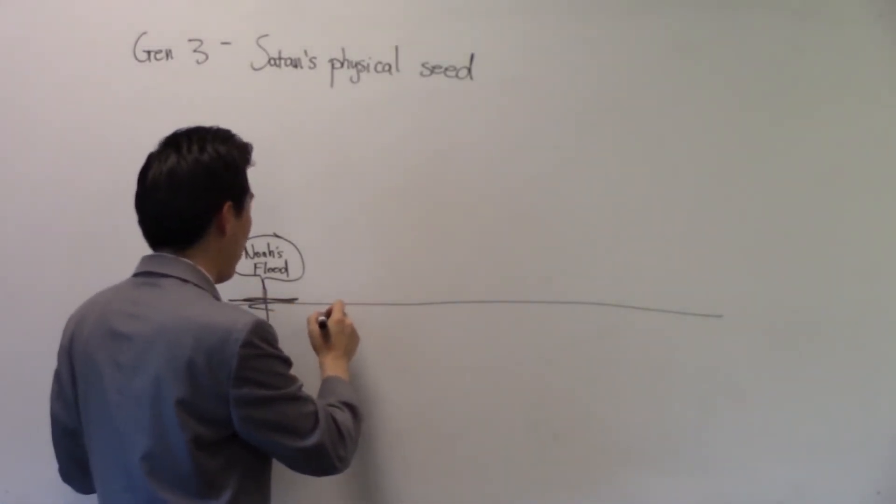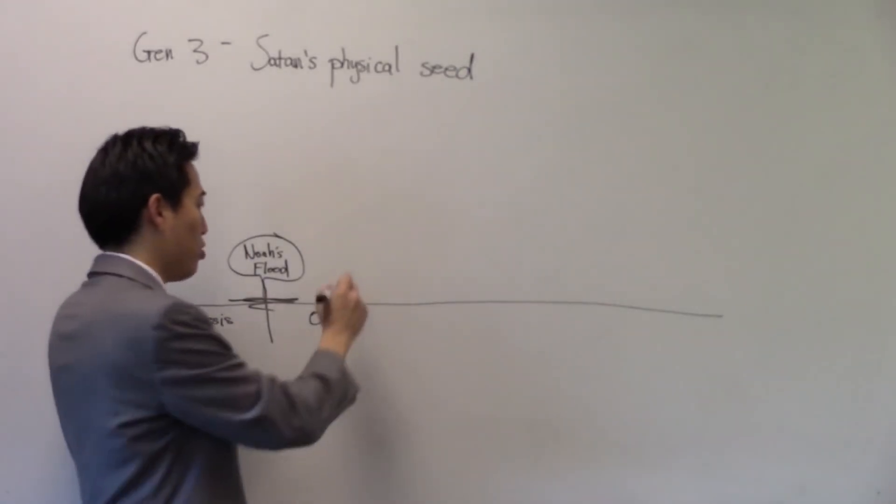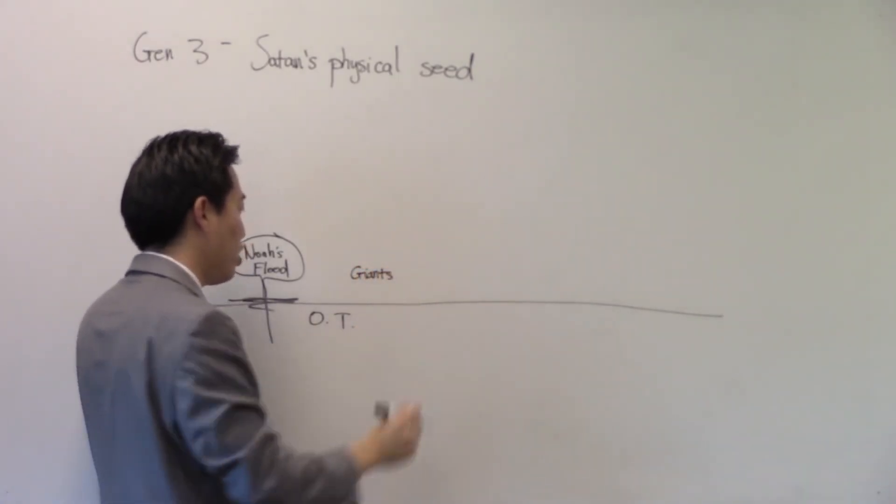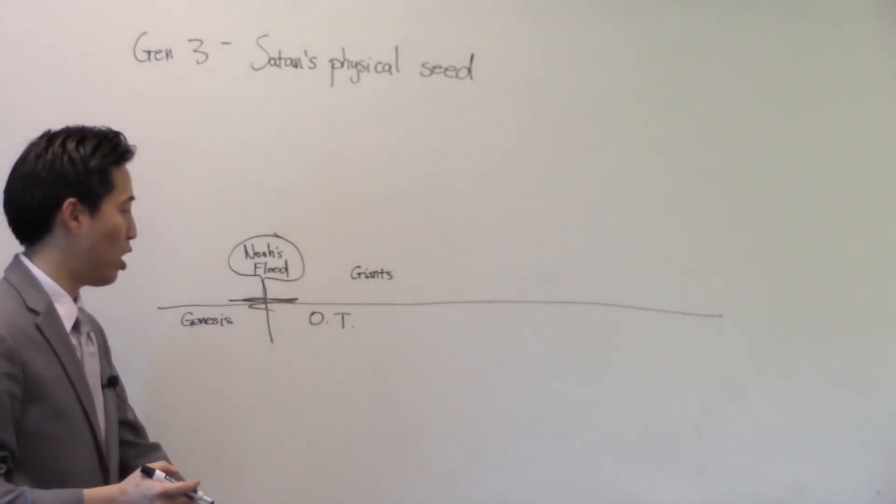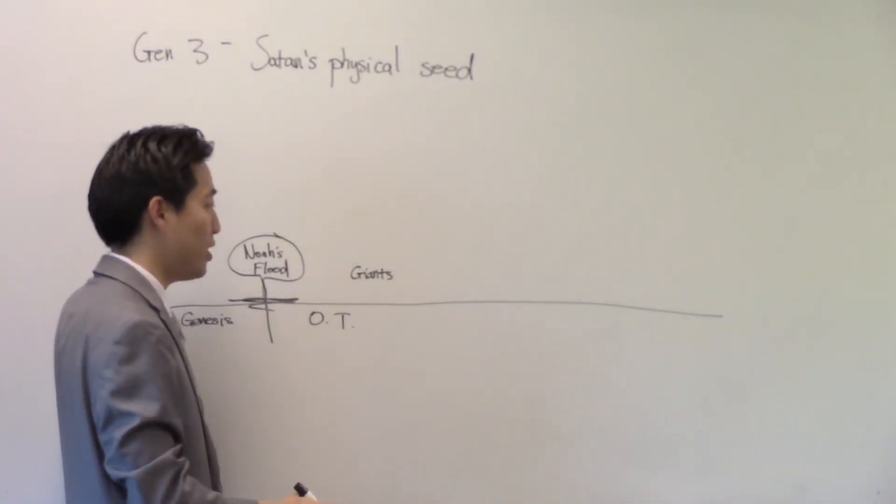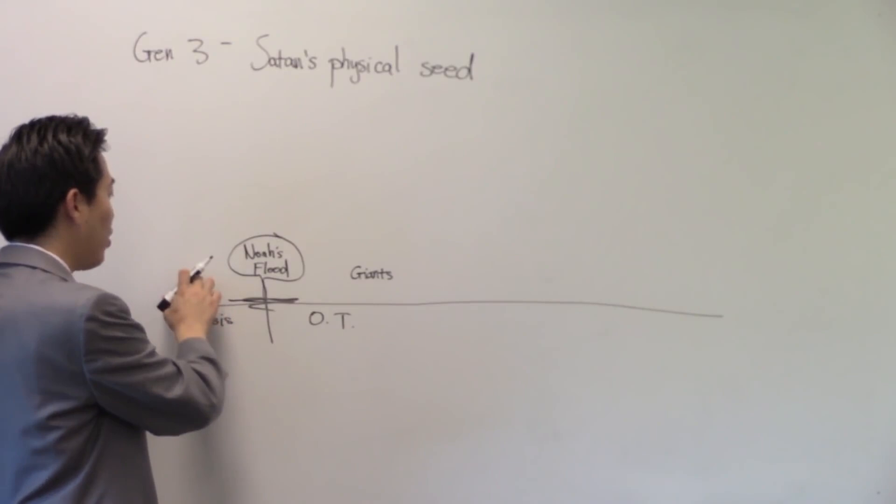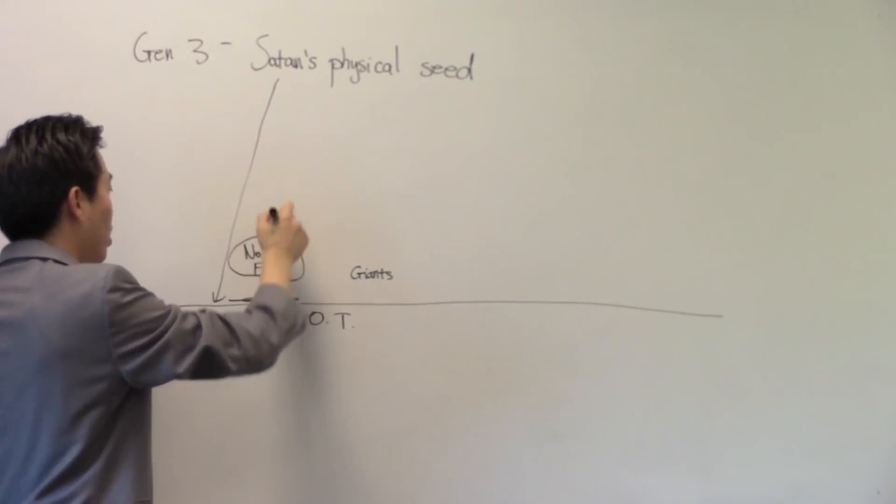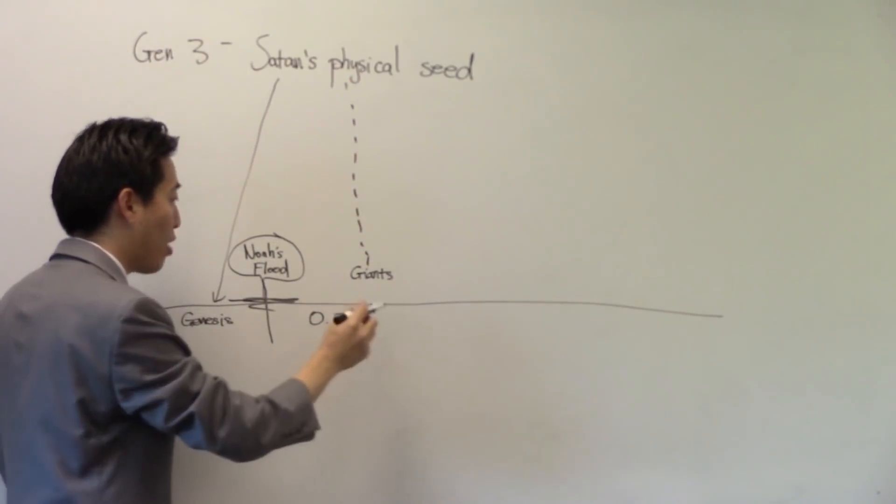Satan's physical seed, it was wiped out. However, what you're going to find out later on in the Bible throughout the rest of the Old Testament, we see them mentioned again. For example, you see in the book of Numbers, when they conquered the Promised Land, there are these giants. You see in the book of Samuel, when David and his sons were conquering the world, you see the giants mentioned again. Even though this was definitely there, the physical seed was definitely there at Genesis, Noah's flood wiped them out. But then there were like little remnants going around throughout the Old Testament.